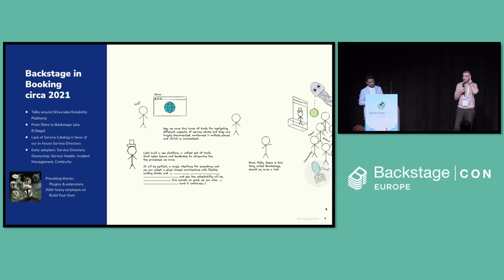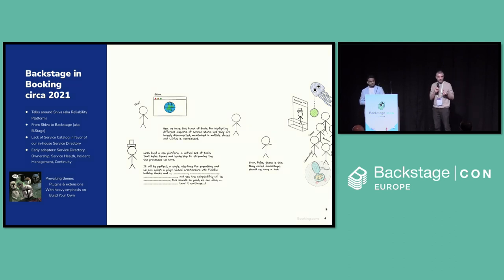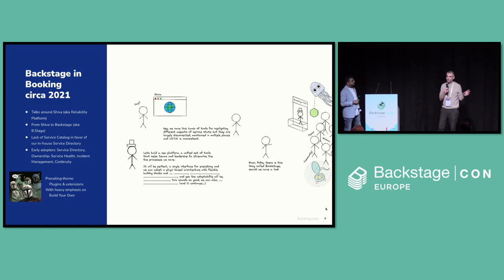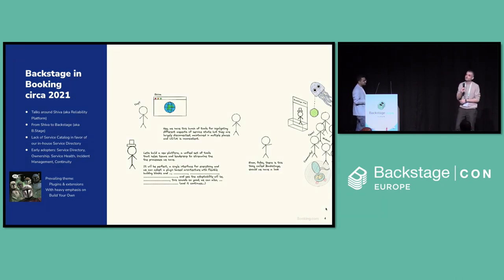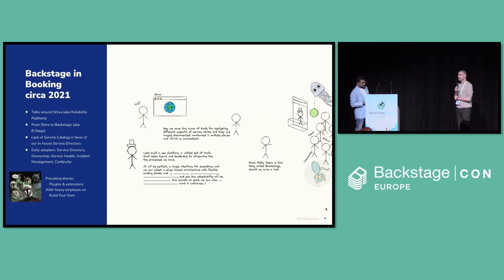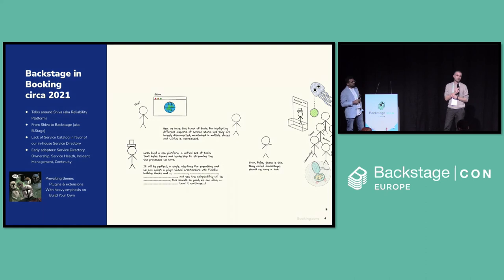In that meeting, Booking — being Booking and liking its own tooling — discussed building something called Shiva, a reliability platform. The two key requirements I could extract from those notes were: first, a uniform UI and UX; and second, a plugin-based system to move forward.